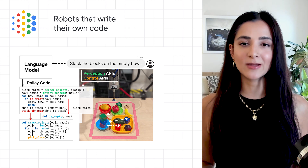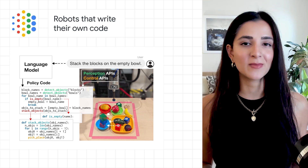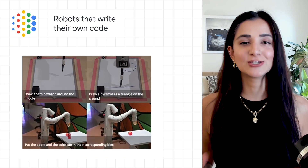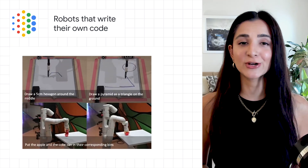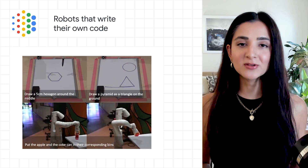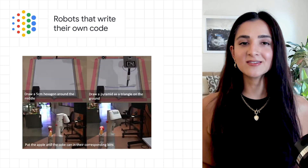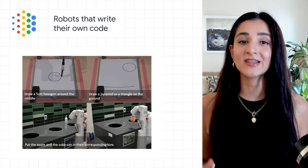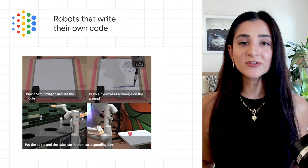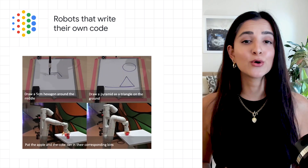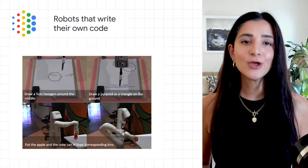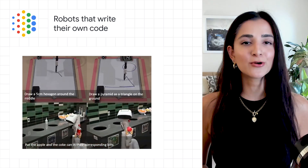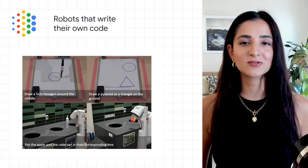When provided with several example instructions formatted as comments paired with corresponding code, language models can take in new instructions and autonomously generate new code that recomposes API calls, synthesizes new functions, and expresses feedback loops to assemble new behaviors at runtime. To explore this possibility, the Google Robotics team developed Code as Policies, or CAP, a robot-centric formulation of language model-generated programs executed on physical systems.